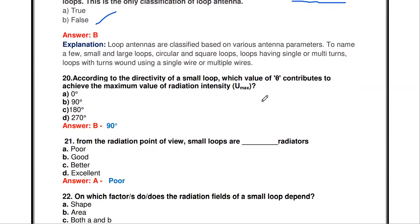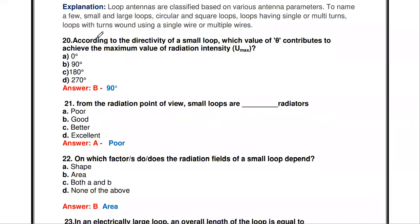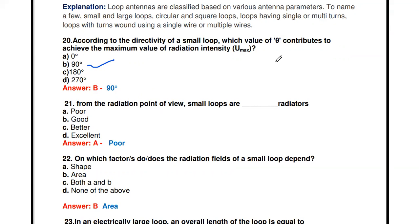According to the directivity of a small loop, for which value of theta is the maximum radiation intensity achieved? The answer is theta equal to 90 degrees — at 90 degrees the maximum value of radiation intensity is achieved.